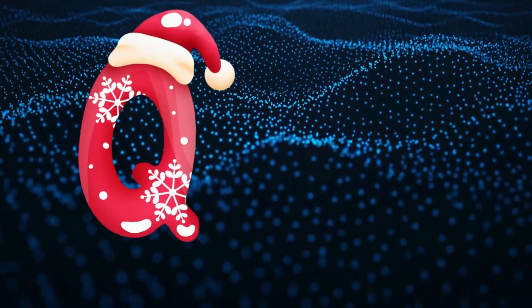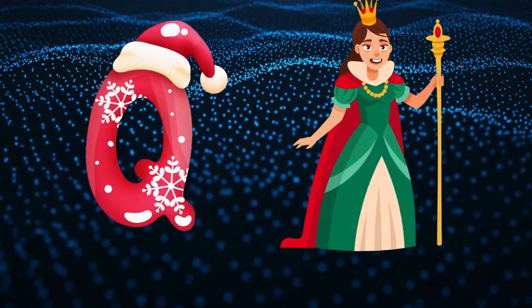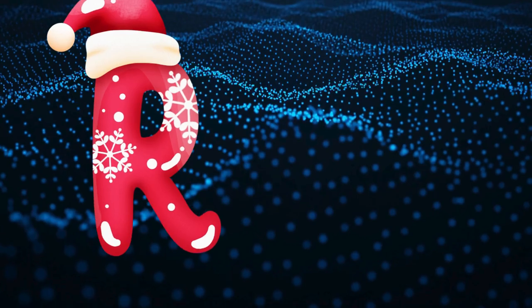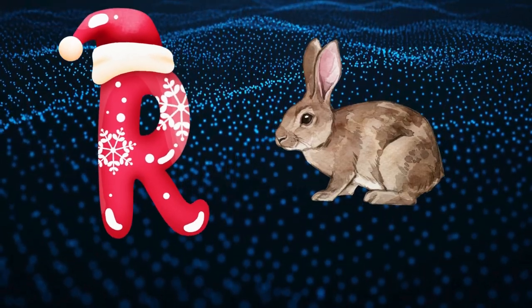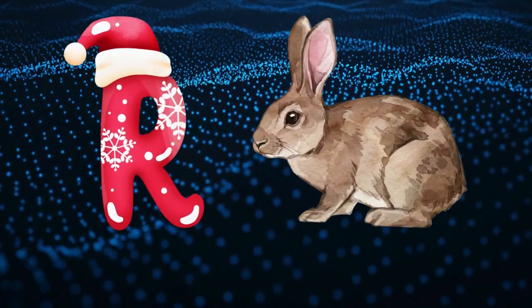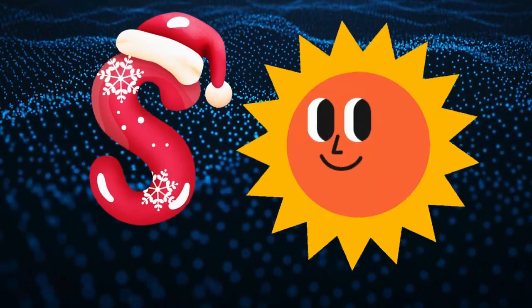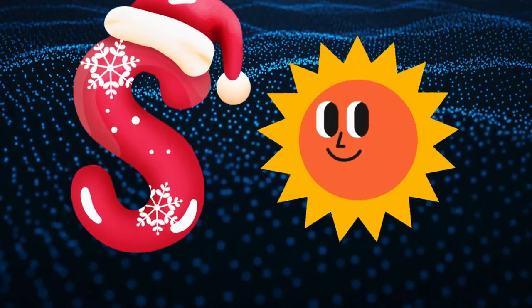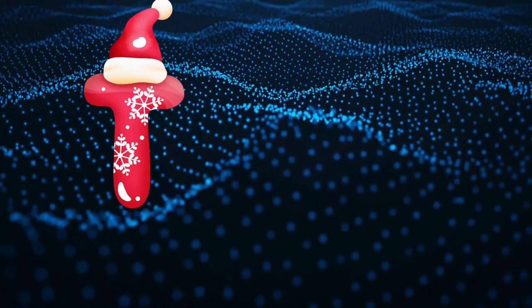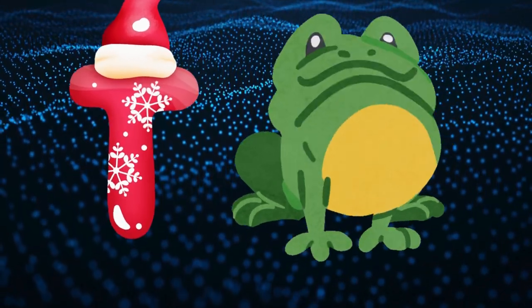Q is for queen, q-q-queen. R is for rabbit, r-r-rabbit. S is for sun, s-s-sun. T is for toad, t-t-toad.